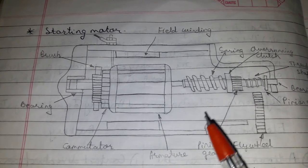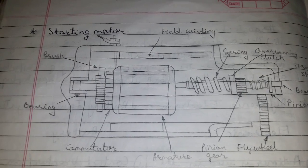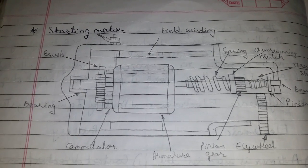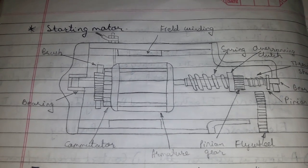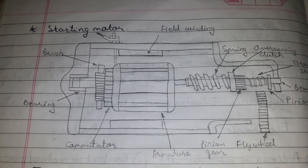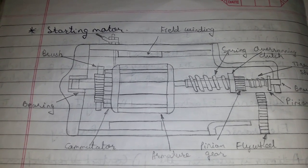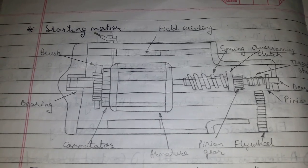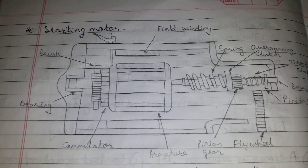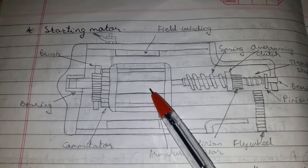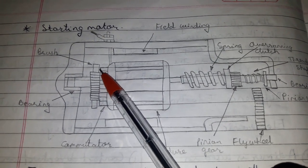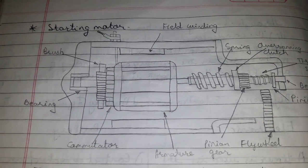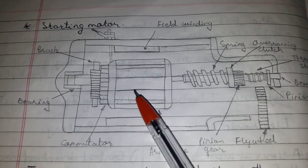Regarding the working of the starting motor: when electric current is supplied to the armature through brushes, current flows through the armature winding.